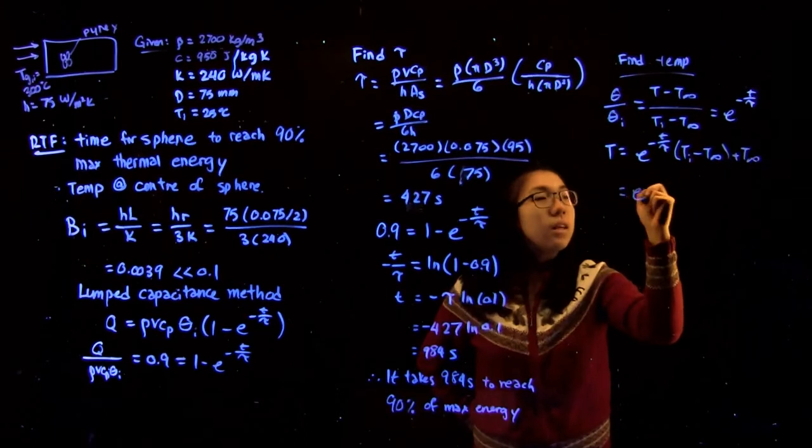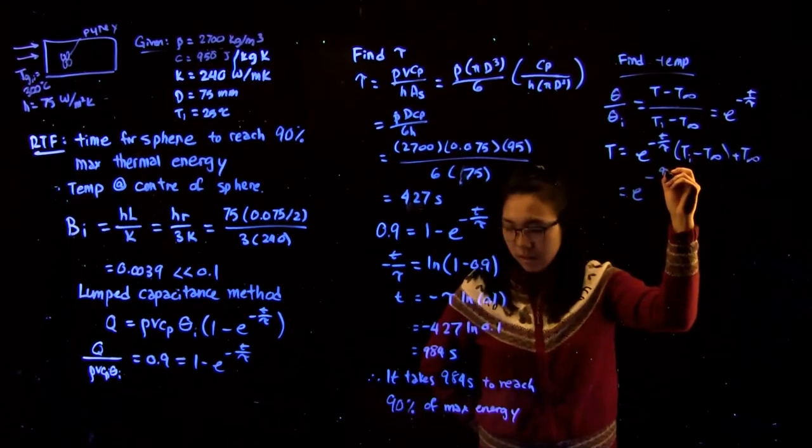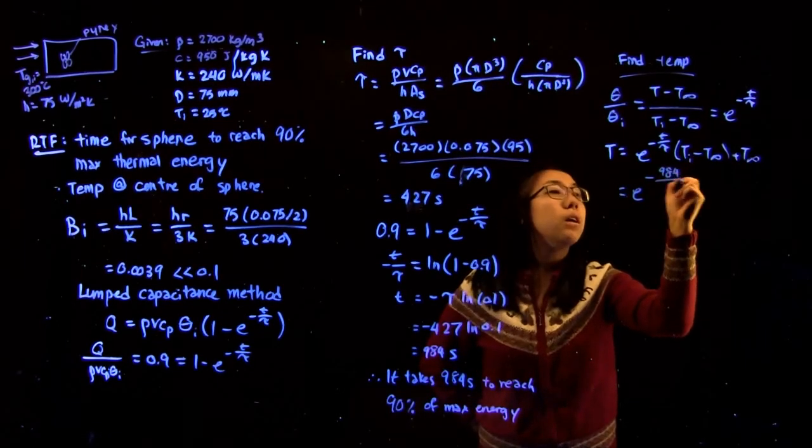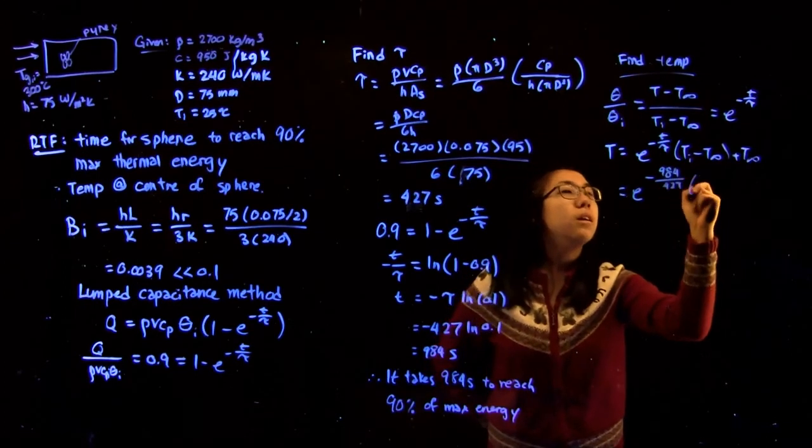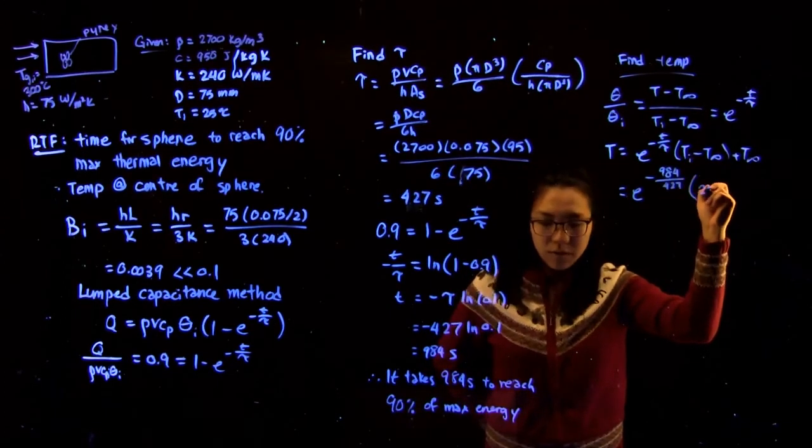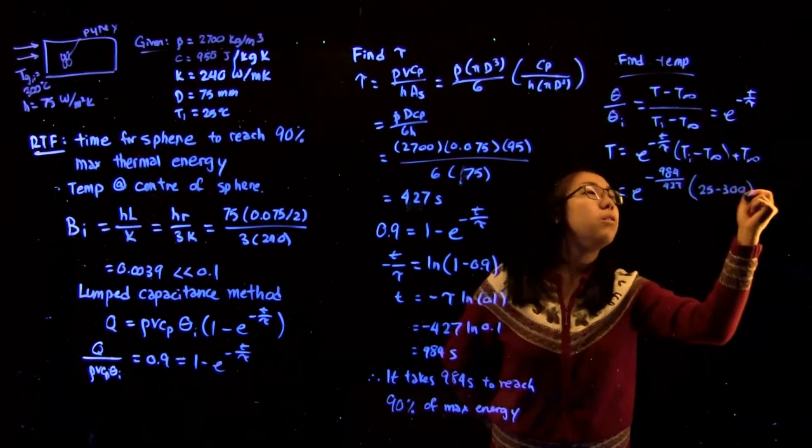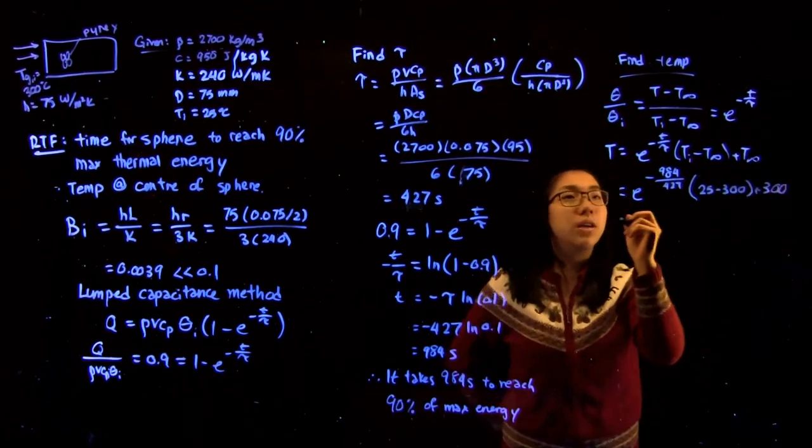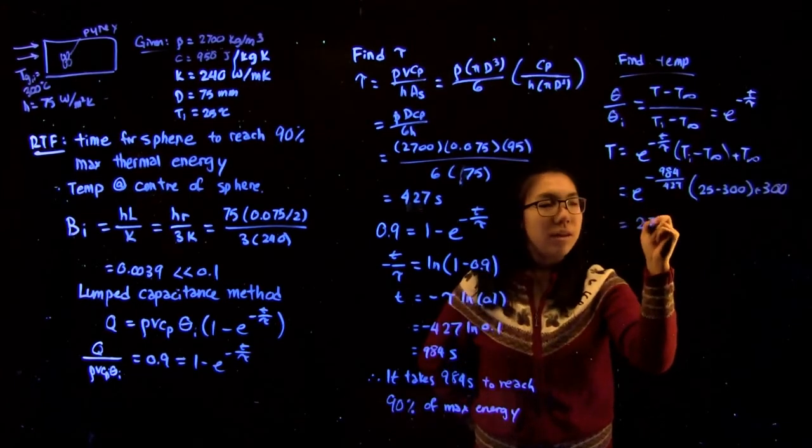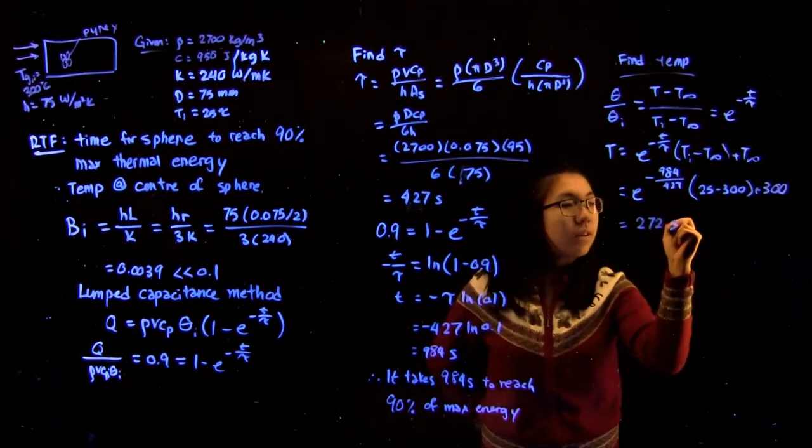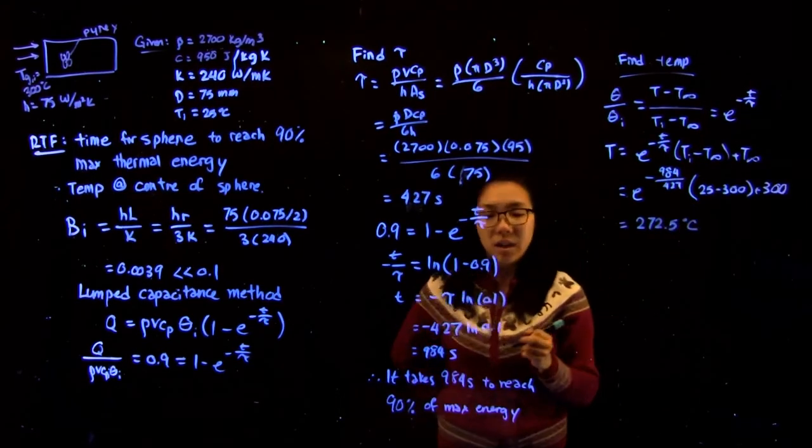This gives e to the minus 984 over 427 times (25 minus 300) plus 300, giving a final temperature of 272.5 degrees Celsius.